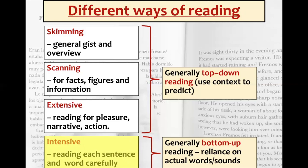Skimming, scanning, and extensive reading are generally top-down readings. This is where you can use context to predict your outcome. For instance, if we've got a bus timetable, it might give you the route and numbers of the times the bus goes - you know the time you want and what you need to look for, and that aids scanning. Intensive reading, however, is generally what you call bottom-up, where you have to build up meaning from individual words and sounds, eventually building up sentences and then paragraphs. That's the difference between top-down and bottom-up reading.